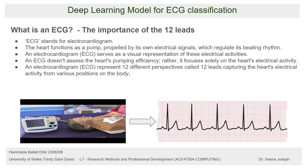The first point is to explain what is an ECG and to talk about the importance of 12 leads. The concept behind the ECG is that when the heart pumps blood through the body it also creates periodic and regular electrical signs. An ECG, which stands for electrocardiogram, is a visual representation of the electrical activities of the heart. An electrocardiogram represents 12 different perspectives called 12 leads, which are 12 different inputs from the human body.